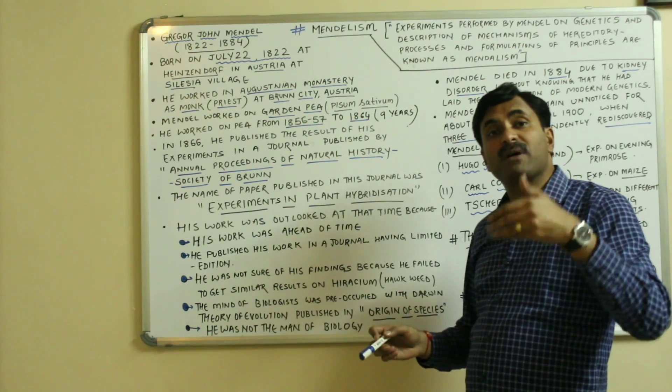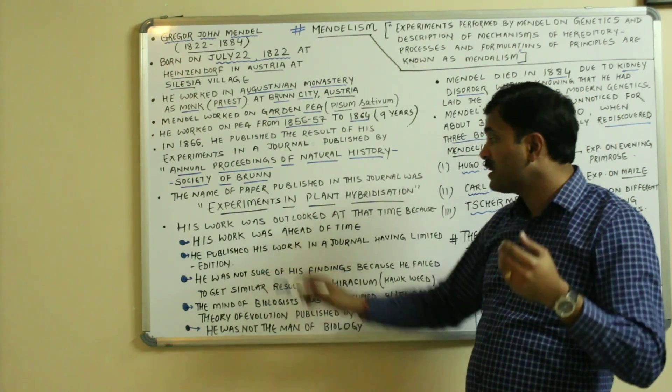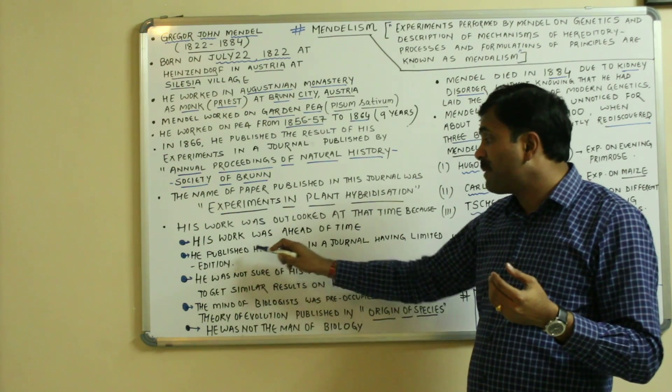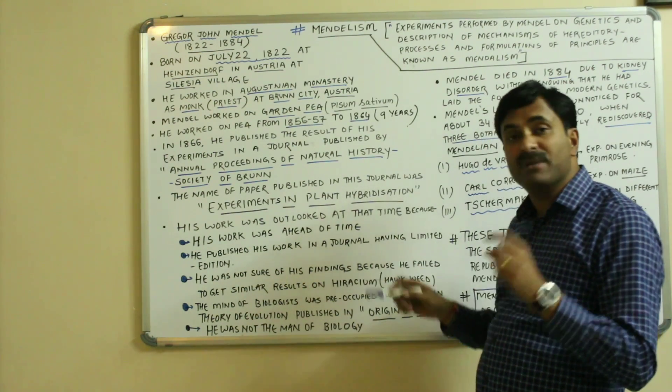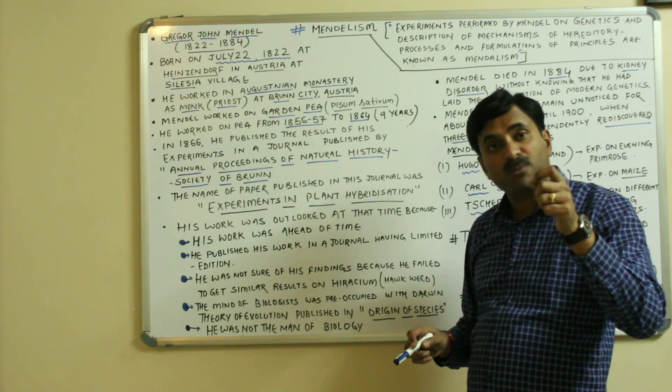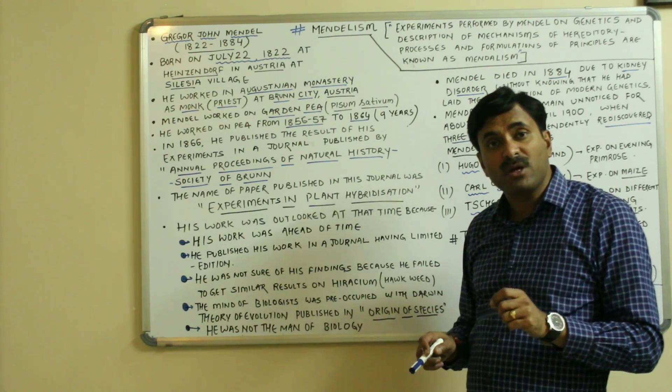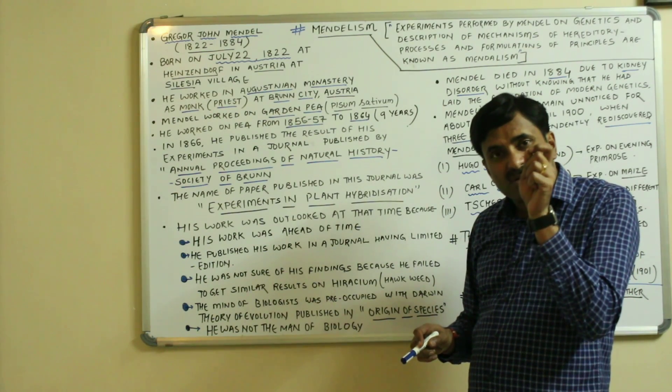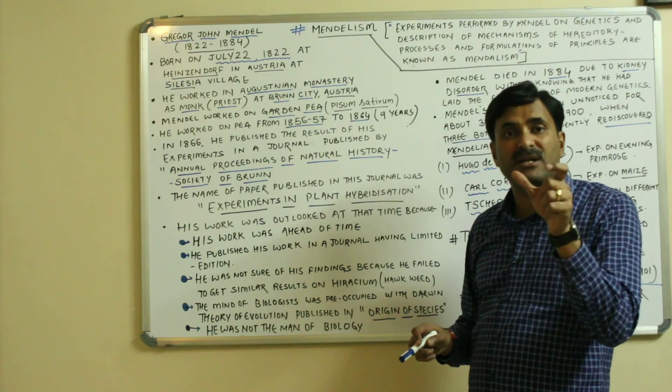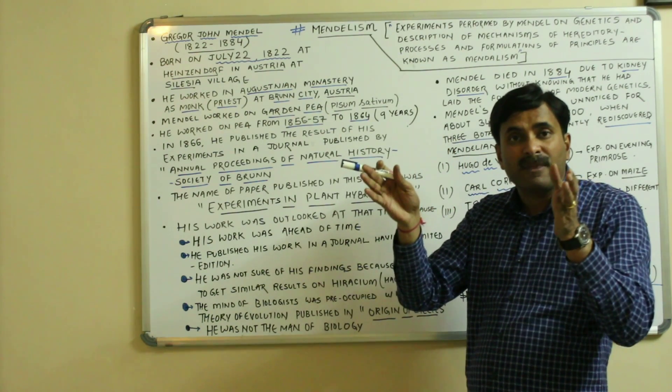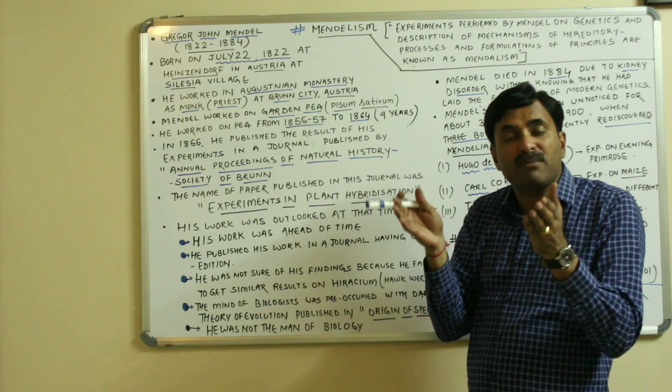The next reason was the failure that he published his work in a journal having limited editions. The journal in which he published was Annual Proceedings of Natural History Society of Brno, but the journal was having a very limited edition. It was not distributed to the various universities of the world, so his work has not reached the prominent biologists of that time.